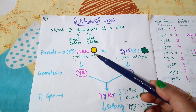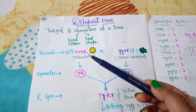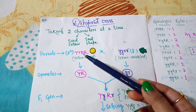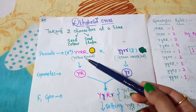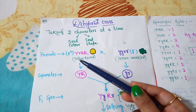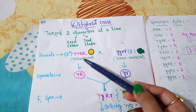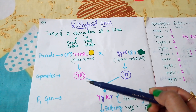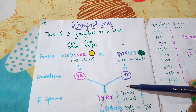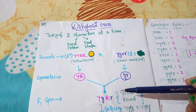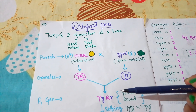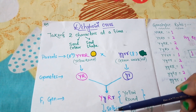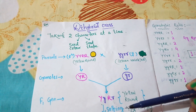Just as in the monohybrid cross tallness is represented as capital T capital T, in this cross yellowness is represented as capital Y capital Y, and roundness is represented as capital R capital R. Both characters are considered at a time — one is yellow and one is round — and together they form the dihybrid form. The gametes may contain the genes capital Y capital R, or small y small r. By crossing these two, he got the F1 hybrid with the genotype capital Y small y capital R small r, showing the phenotype of yellow and round.